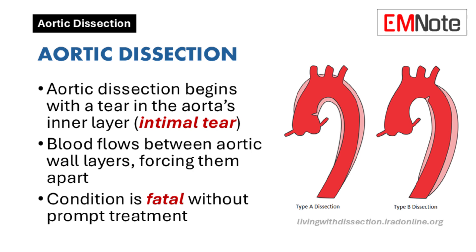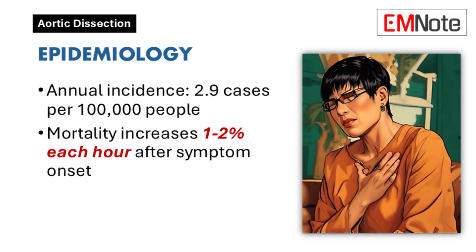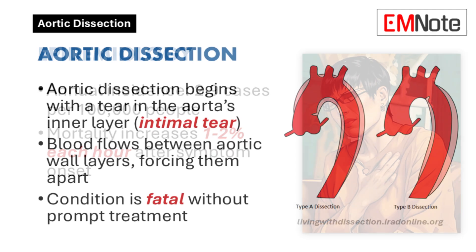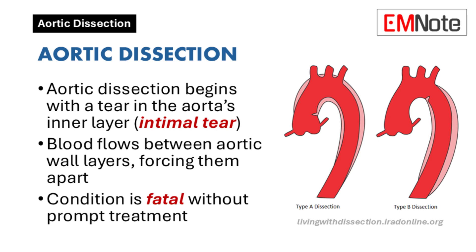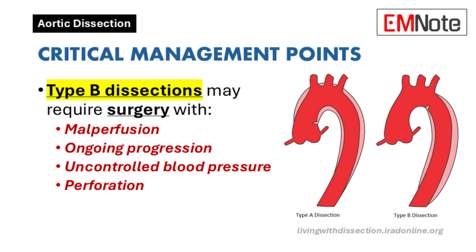The location of the tear dictates urgency and treatment. Type A dissections are generally more life-threatening and often require emergency surgery. Because the ascending aorta is close to the heart, a tear there can very quickly lead to aortic rupture, severe valve problems, or cardiac tamponade. In most cases, surgery is the answer because the risks of delay are too high.